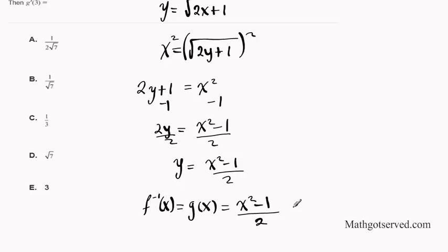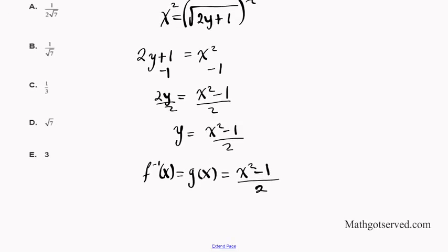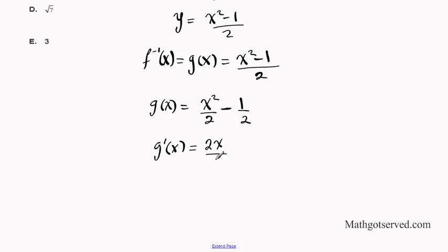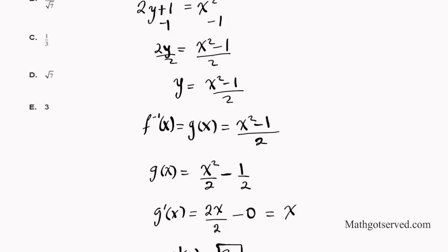Now let's find the derivative G'(x). Using the power rule on x²/2 gives 2x/2 = x, and the derivative of the constant −1/2 is 0. So G'(x) = x. Therefore G'(3) — just plug in 3 — equals 3. That is the final answer; the answer to this problem is E.